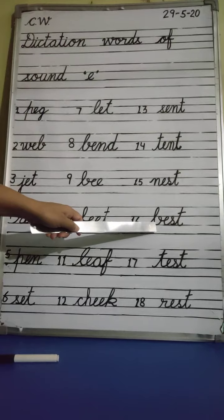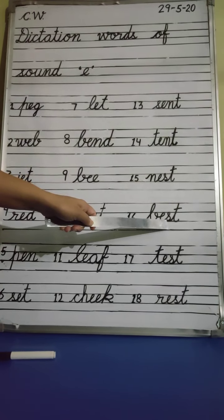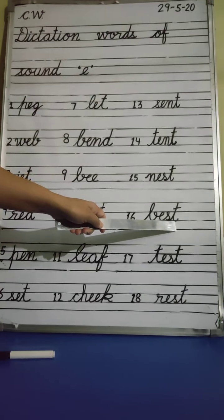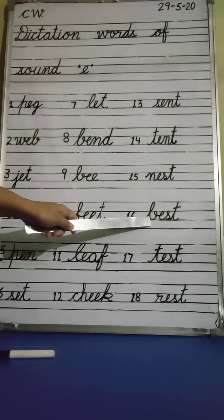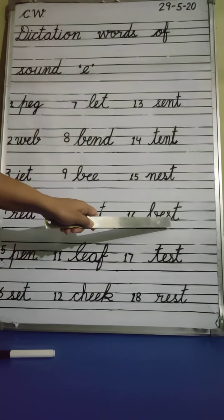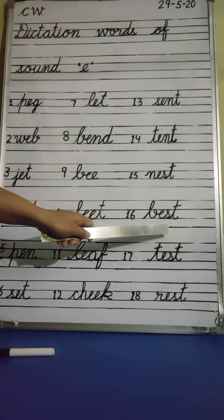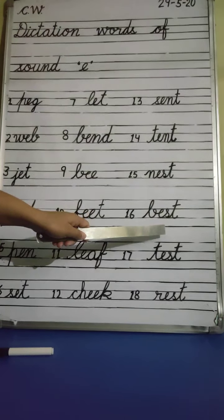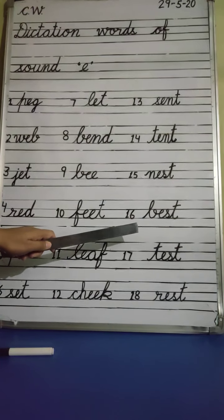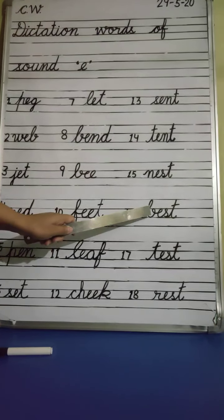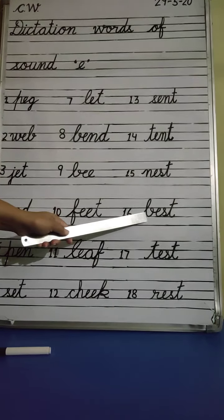Next. B, E, S, T — Best. Best means sabse achcha. Good means achcha and best means sabse achcha. Okay.